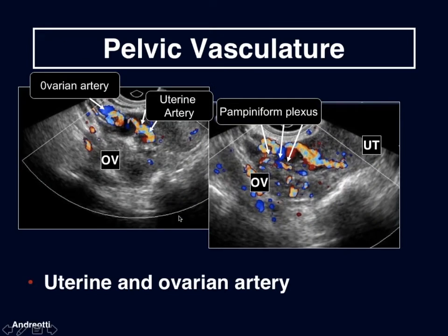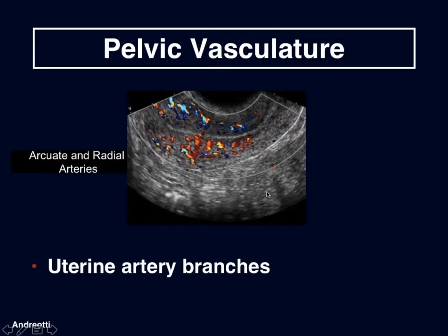Here's a sonographic transvaginal image showing these vessels — the uterine artery along the side of the uterus, the ovarian artery coming from the region of the side wall, meeting here and forming the pampiniform plexus that feeds the ovary. The uterine artery also provides branches which pierce the myometrium and divide into anterior and posterior arcuate arteries. From these arcuate arteries arise branches which penetrate deeply into the myometrium, forming radial arteries.